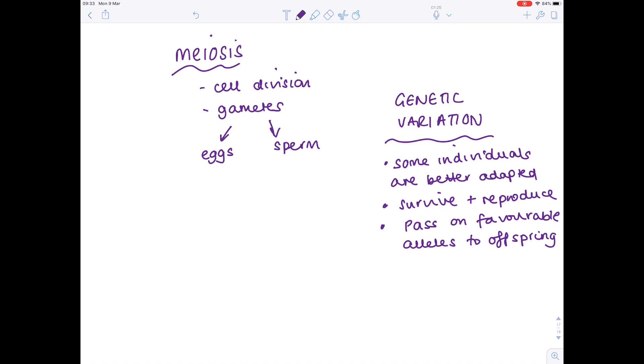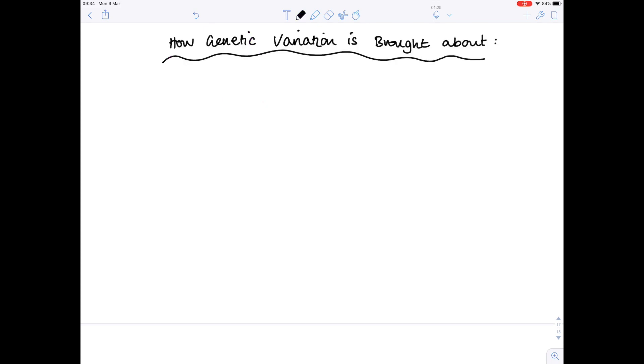And that explains why we're all different to each other, the exception really being identical twins. But how does this genetic variation occur in meiosis? And that's really what this video is all about.